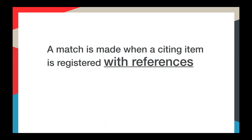When you register your references, we take each citation and try to find a match for it in our database. If we find a match, we'll display it in your submission log, and you can also retrieve matches using an API. We also make that match available to the member responsible for the matched item — that's really how the magic of our cited-by service happens. If that member is a cited-by participant, they can retrieve that match and display it on their website. Note that cited-by matches are made when a citing item is registered with references — having a DOI does not mean references have been deposited.